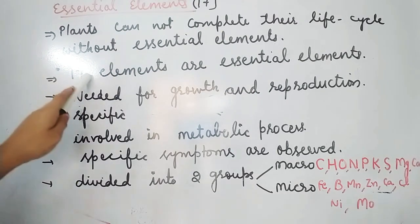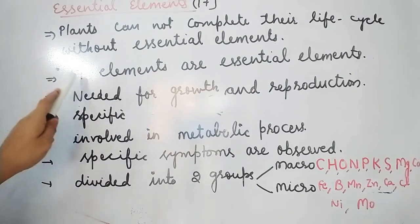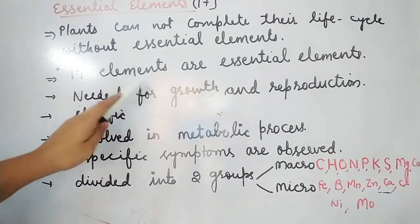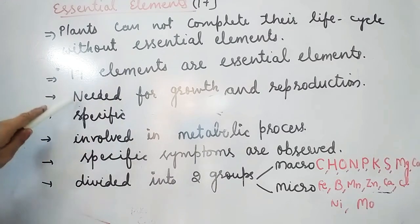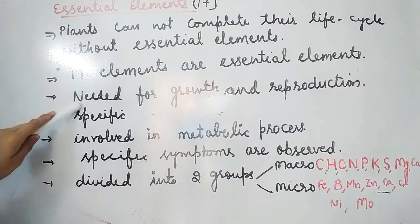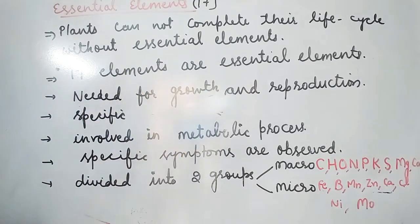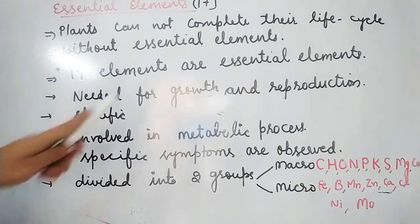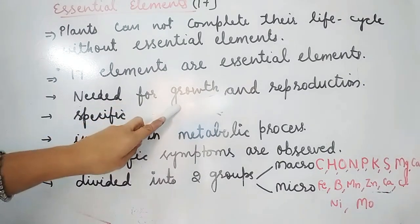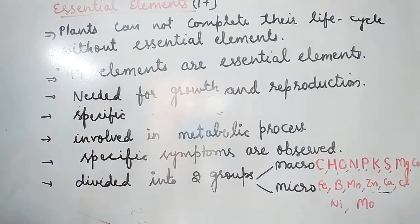These 17 elements are needed for plant growth and reproduction. Plants can depend on them in any phase — whether in vegetative growth or in reproductive growth.